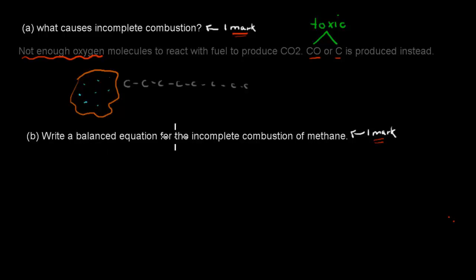Now the second part was write a balanced equation for the incomplete combustion of methane. So this here is the equation. It's not yet balanced. You're just given methane, but how we can figure out what methane actually is, is if you know what an alkane is.